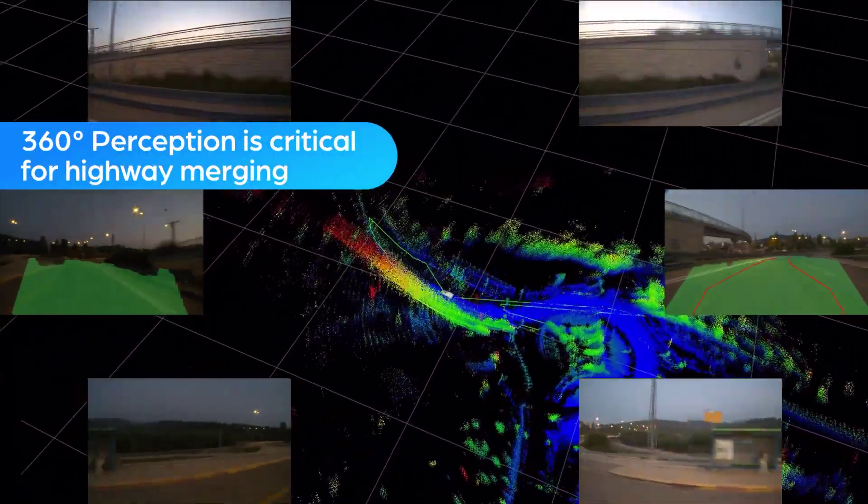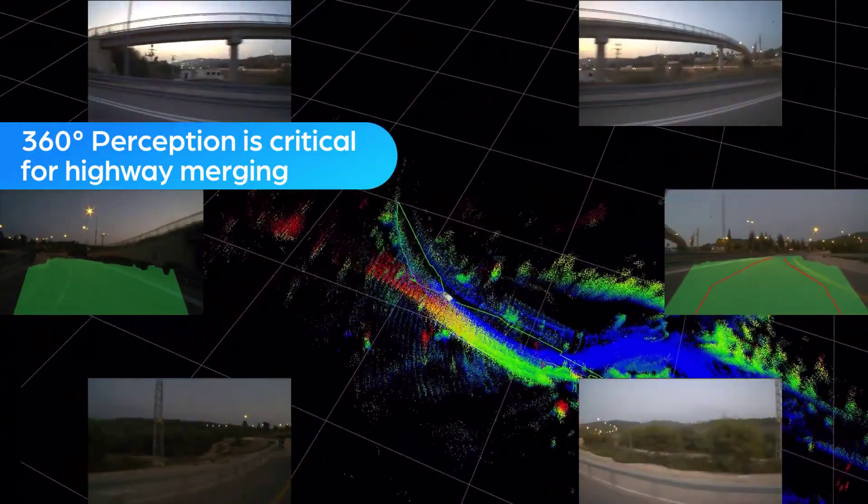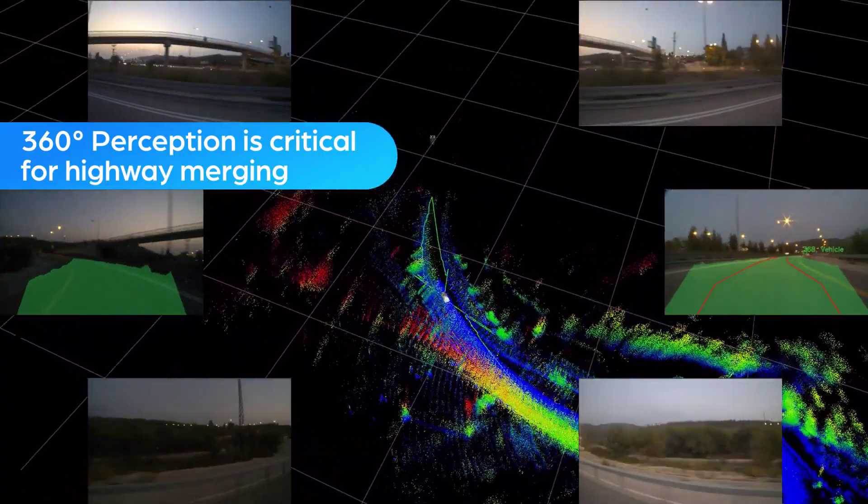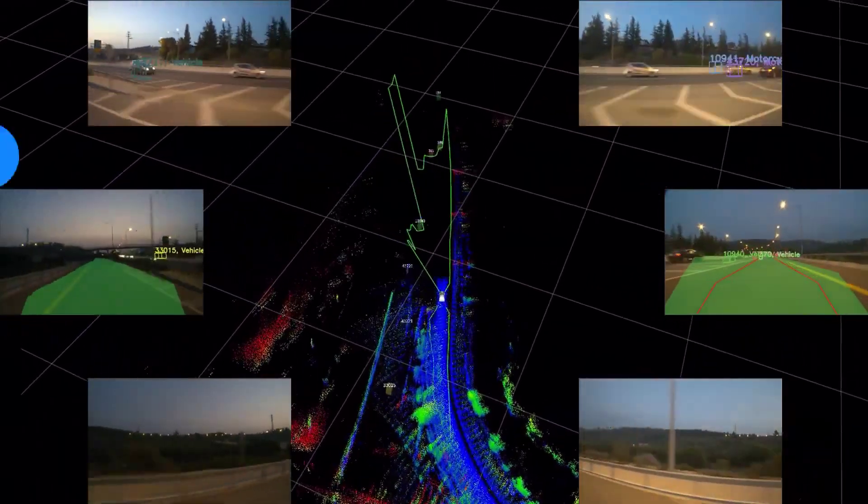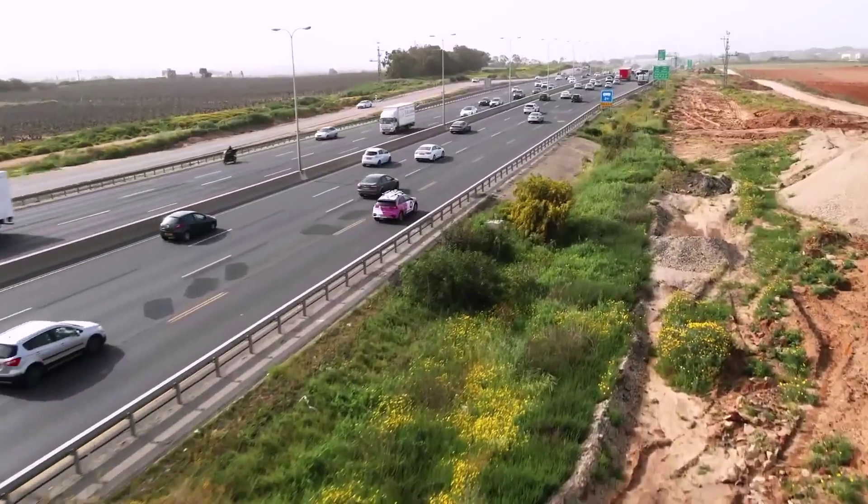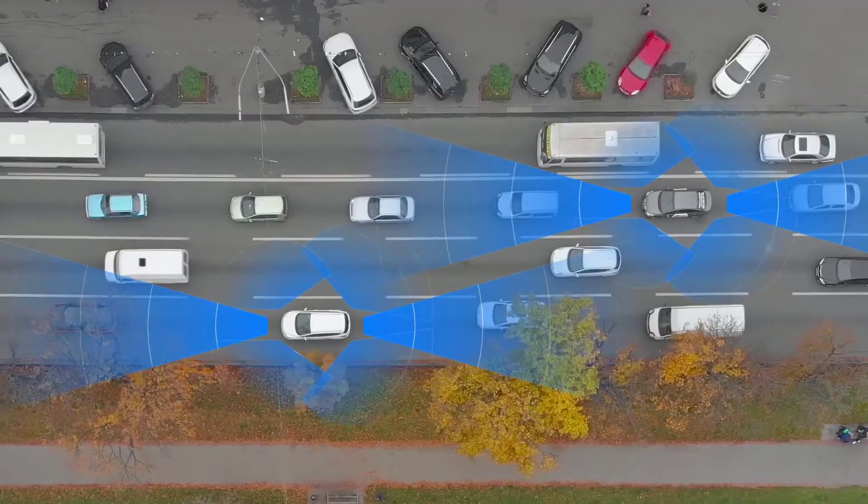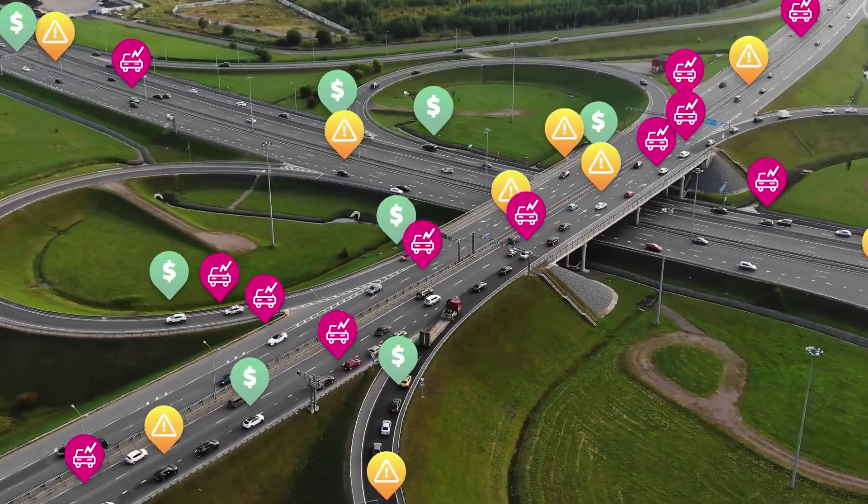With projections showing radar system sales for autonomous vehicles growing from 55 million units in 2019 to 400 million by 2040, setting a course to capture the growing demand by collaborating with original equipment manufacturers, OEMs, on the road to ramping up production.